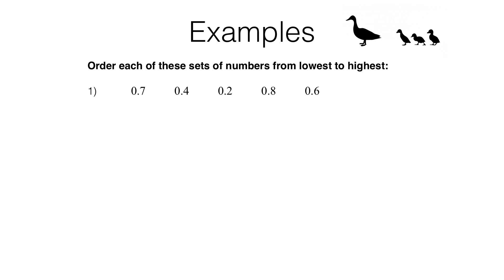This particular question is nice and easy because all of the digits in the tenths place value column are different, so we just need to put them in order from lowest to highest. That will give us the following.